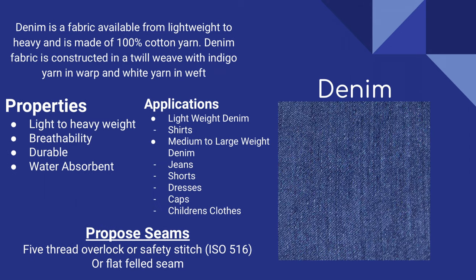Moving on, we have denim — one of the world's most iconic fabrics. The moment you say the word denim, everybody knows what you're talking about. Denim has been around since the 1950s and it hasn't gone out of style since then. It's mainly made out of 100% cotton yarn. Some of the properties of denim are that it's light to heavy weight, breathable, durable, and water absorbent.